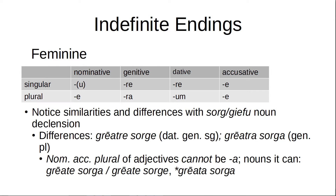The feminine is similar to the sorghivu declension. The nominative singular is nothing or -oo, genitive is -re, dative is also -re, and of course the instrumental is then also -re. The accusative is -eh. Plural nominative -eh, genitive -ra, dative -um, accusative -eh. The differences are the dative/genitive singular — Grátresorga — and the genitive plural — Grátrasorga. The nominative/accusative plural of adjectives is also slightly different because it must be -eh; you cannot say -ah. You can say either Grátresorga or Grátresorga, but you cannot say Grátasorga — that's wrong.